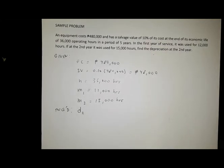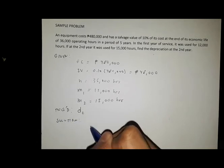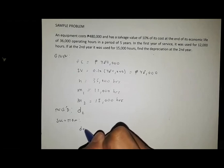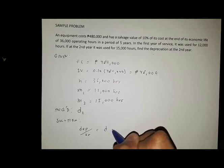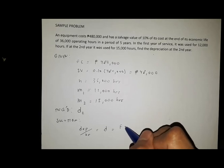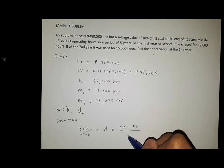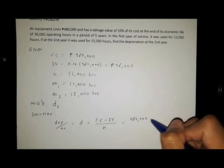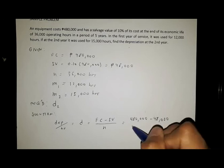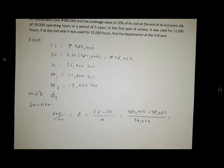So in this problem we are required to solve for D2. In order to solve for D2, let's solve for the depreciation per hour. So depreciation per hour, or D, is equal to FC minus SV over n.